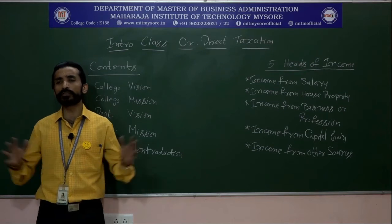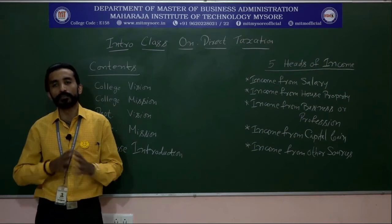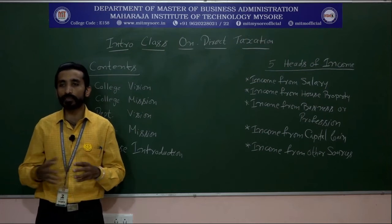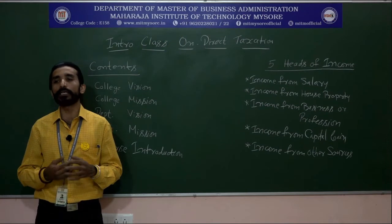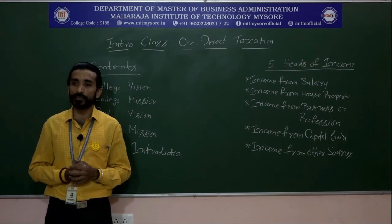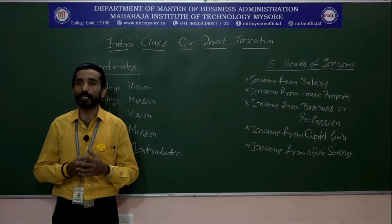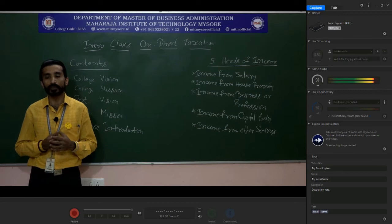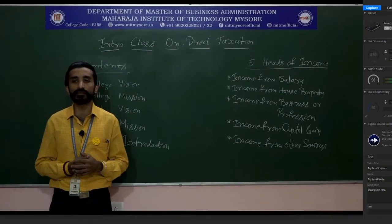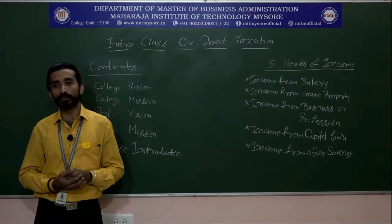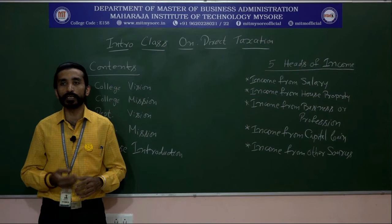What are the objectives of tax? The objectives are: it reduces the gap between the rich and poor; it enables the government to maintain law and order and safeguard the security of the country from foreign powers; it helps in providing infrastructure facilities and welfare activities like roads and irrigation; it provides entrepreneurial opportunities; and it helps achieve balanced socio-economic growth.